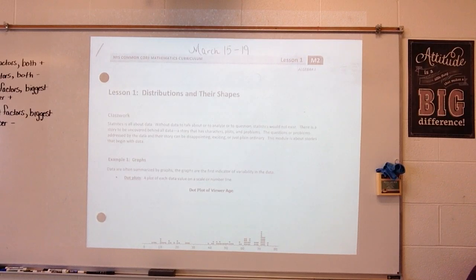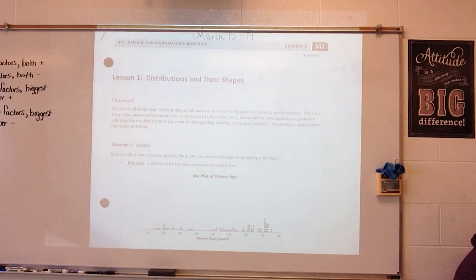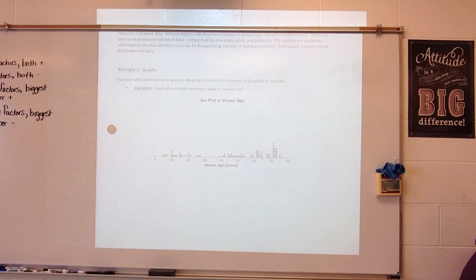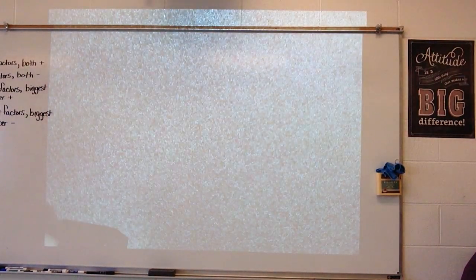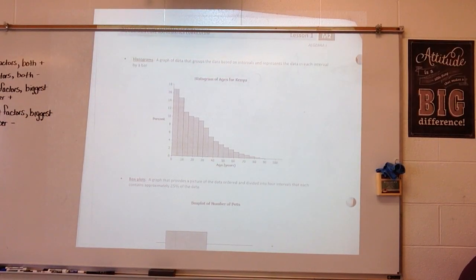Let's look at example number one. Data are often summarized by graphs. The graphs are the first indicators of variability in the data. A dot plot is a plot of each data value on a scale or number line. They give us an example of a dot plot — they've taken all their data and put a dot where all of that data is.